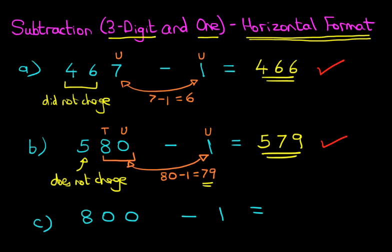I'm sure quite a few of you are shouting out the answer. But let's just work through this. The number we are subtracting is 1, that's the units. Now in the number 800, we've got 0 units. So 0 minus 1, we cannot do.